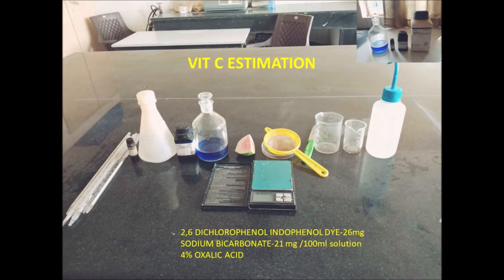Today we are discussing the estimation of vitamin C. For this estimation, we need two chemicals. One is 2,6-dichlorophenol-indophenol dye, and the second is 4% oxalic acid. First, we will discuss how to prepare the 2,6-dichlorophenol-indophenol dye.